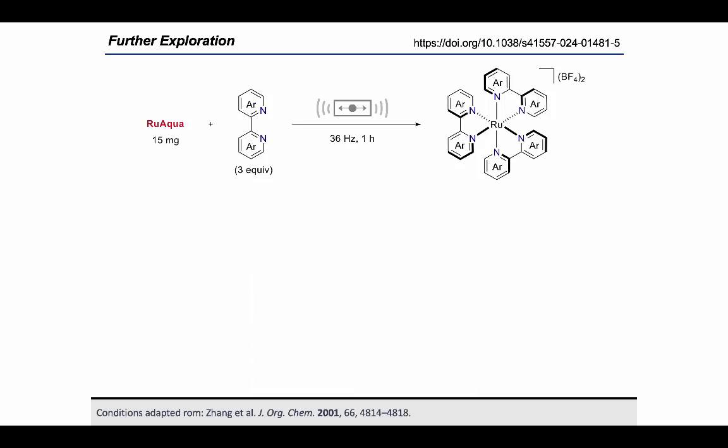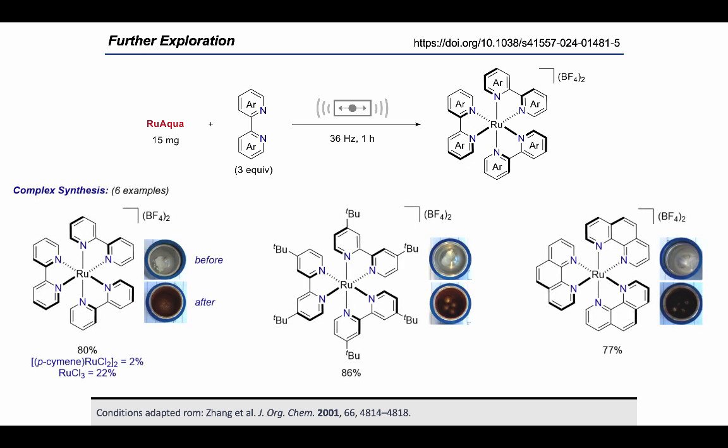When other ruthenium catalysts were used, not only were the yields significantly lower, the reactions were also a lot messier and they couldn't be purified in this way. So we now know that RuAqua can be used as a starting material in the synthesis of other complexes. Can we once again take this one step further? What about making a library of new complexes in situ?